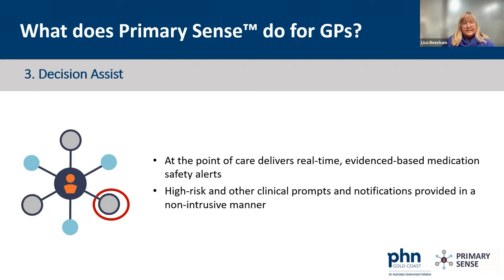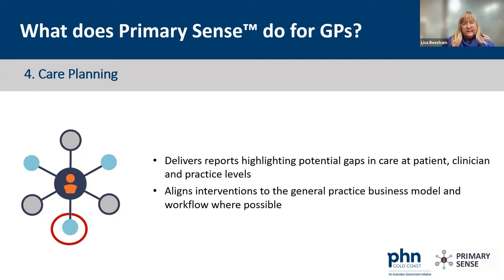If prescribing azathioprine and no TPMT screening has been done, it will give you a prompt — and that can save a patient's life, because it's happening at the point of prescribing in real time. It gives influenza vaccination prompts for chronic disease and antenatal patients, meningococcal B under 2 and hepatitis A prompts for our Indigenous paediatric populations, and care plan prompts for chronic disease patients in the higher risk band — not for everyone, just those in that higher risk band who are worthy of care plans.